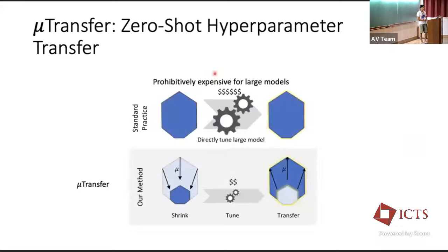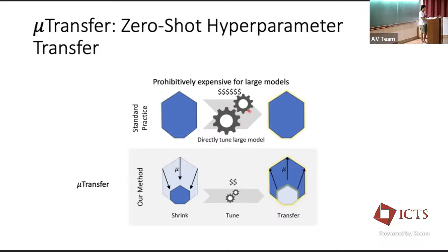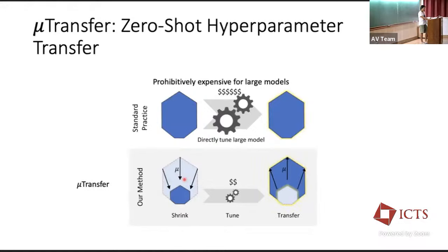This is summarized as follows: for any combination of hyperparameters γ — learning rate, cross-entropy temperature, initialization, learning schedule — the argmin of the training loss over γ as a function of width is roughly invariant as width increases. This is the key insight behind hyperparameter transfer. This leads to what we call μ-transfer, or zero-shot hyperparameter transfer: instead of throwing $10 million on the large model, you shrink the large model to a tiny size, tune aggressively on that tiny model, and copy the hyperparameters back to the large model.